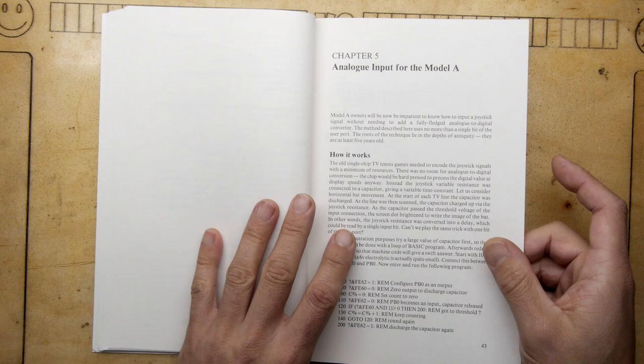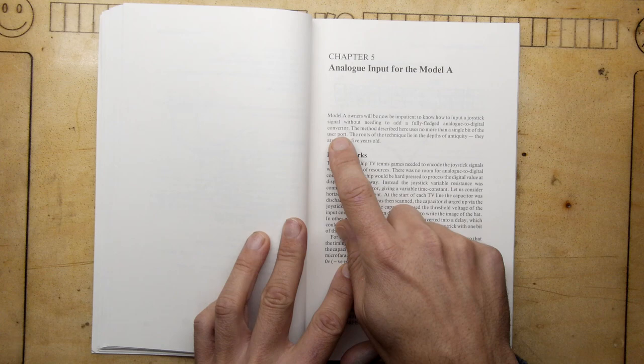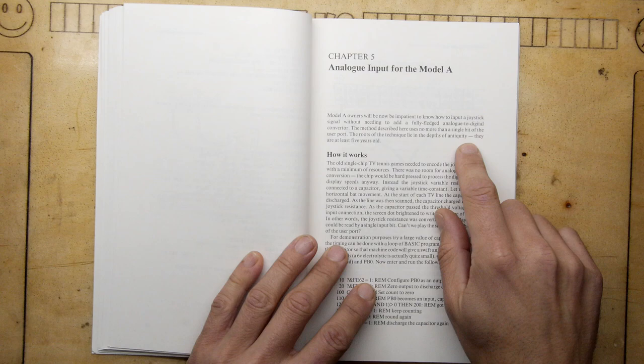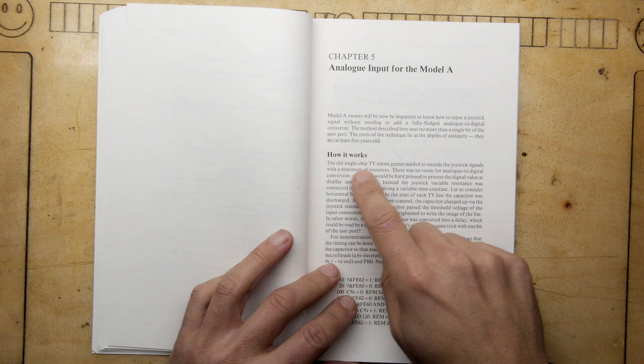Analog input for the Model A. Why is the Model A so different? It does say here Model A owners will now be impatient to know how to input a joystick signal without needing to add a fully fledged analog to digital converter. This method described here uses no more than a single bit of the user port. The roots of the technique lie deep in the depths of antiquity, they're at least five years old, which by this reckoning means they're at least 40 years old.